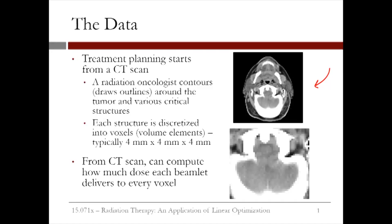In this image, the oncologist would contour structures like the parotid glands, the largest of the saliva glands, and the brain. Then, each structure is discretized into voxels or volume elements, which are typically 4 millimeters in dimension.